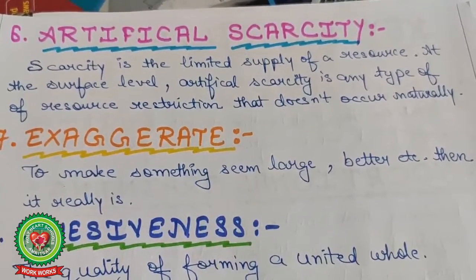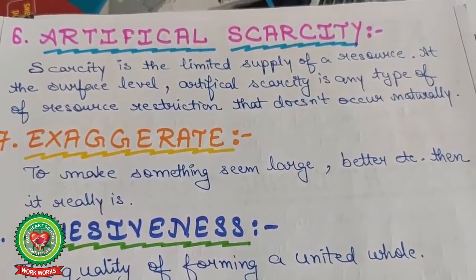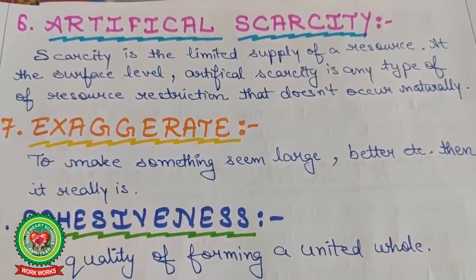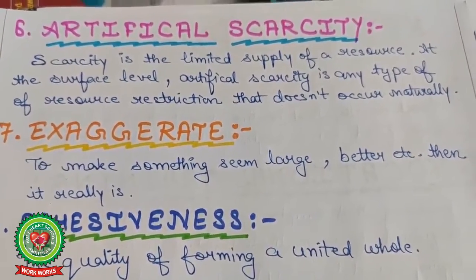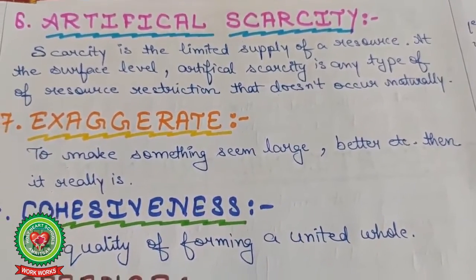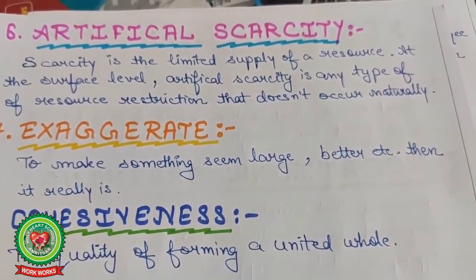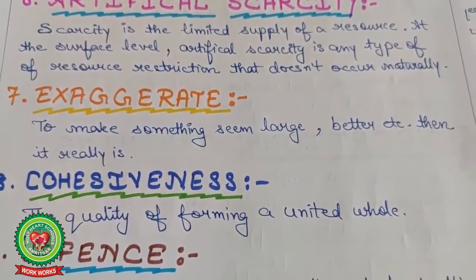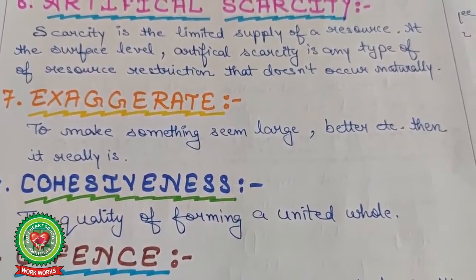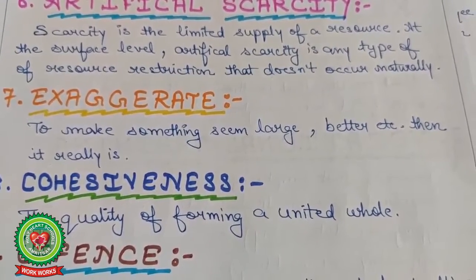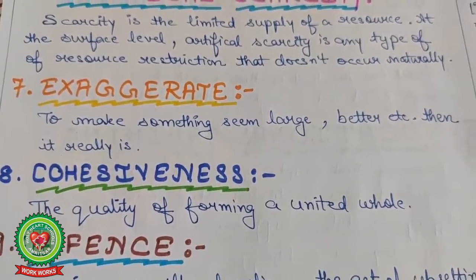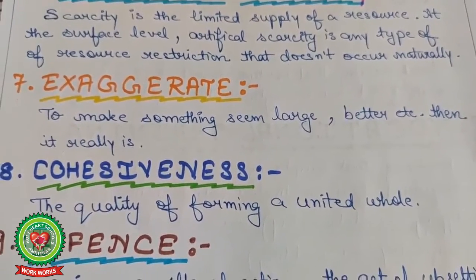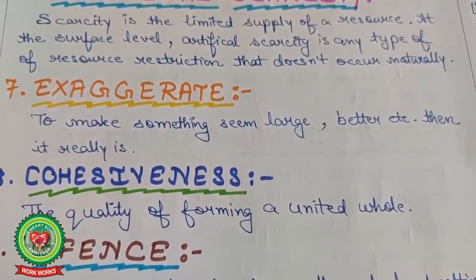Artificial scarcity is any type of resource restriction that does not occur naturally. Simply, it is the hoarding of goods by the seller so that a situation of artificial scarcity is created in the market. Next word: exaggerate — to make something seem larger or better than it really is, like in case of advertisement, the product is shown as very good quality, but when you actually receive the product it is not of that quality as specified in the advertisement.